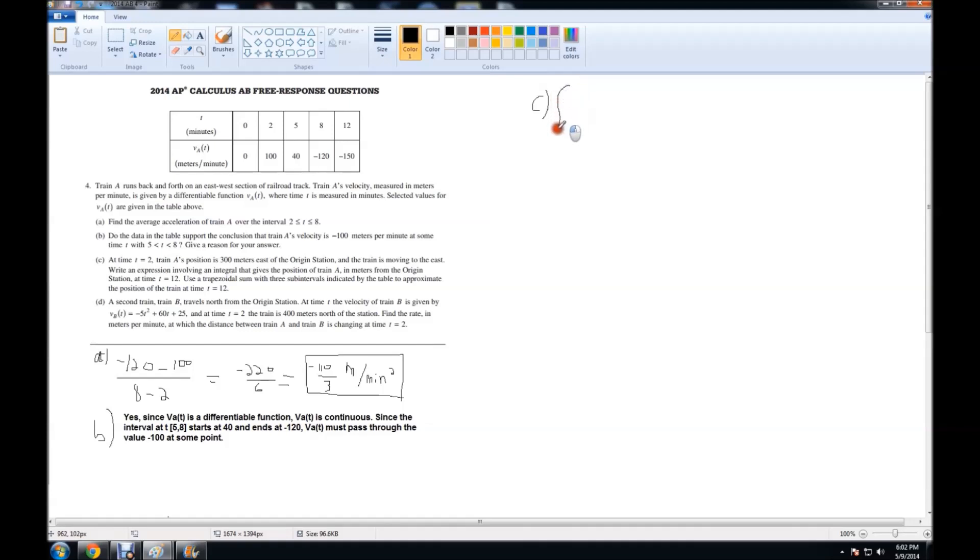If we do the integral from 2 to 12 of VA of T dt, that is going to equal - now I'm going to call the antiderivative of VA of T, I'm going to call it P of T, which stands for position. Somewhere in here I'm going to note that P of T is the antiderivative of VA of T. By the fundamental theorem of calculus, this says it's equal to P of 12 minus P of 2.